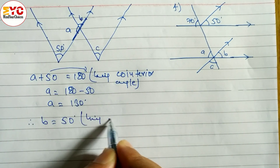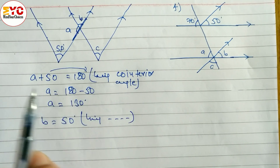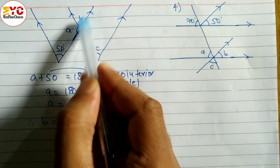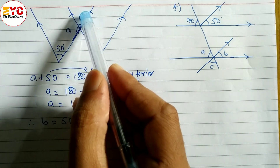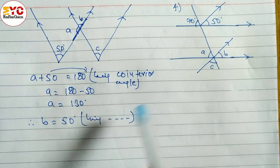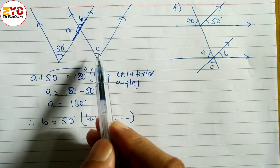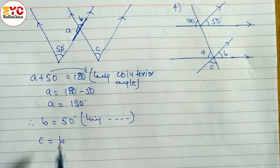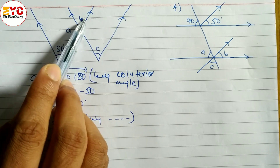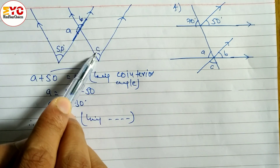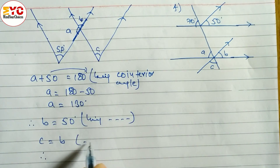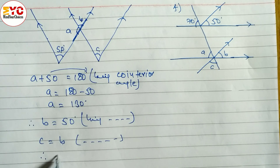Two cases are there — you can do by any process: either a plus b is equal to 180 degrees being supplementary angle because this one is straight, or b is equal to 50 being corresponding angle. Similarly for c also the same: c is equal to b, being corresponding angle, because two parallel lines are here — one angle is inside, one is outside of these two parallel lines. So c is equal to b is equal to 50. Bean corresponding angle. c also equals 50 degrees.